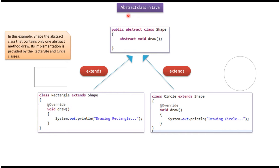In this video tutorial, I will cover abstract class in Java. Here you can see the abstract class Shape — it has a draw method, and this draw method is an abstract method. Here you can see the Rectangle class, which extends abstract class Shape.